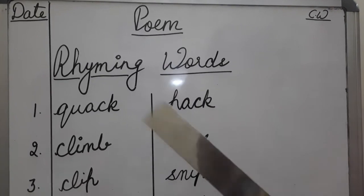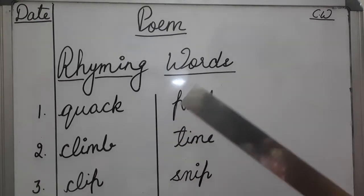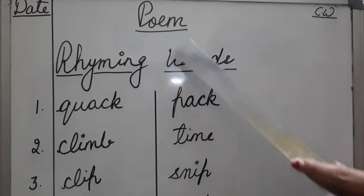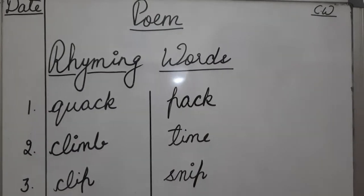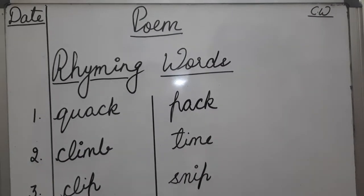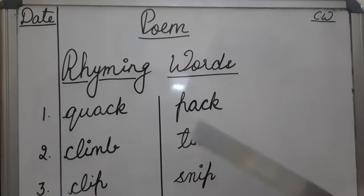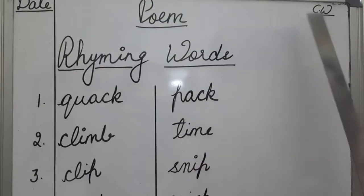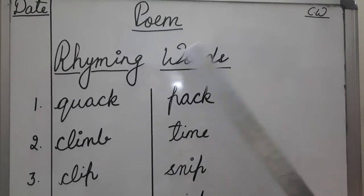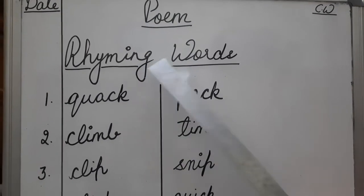So, in today's work, we will do rhyming words of the same poem. Today I am not writing the poem name because you all are aware. You all know what the name of the poem is. So, in the first line, you will write the poem, then date CW. Today's topic is rhyming words.